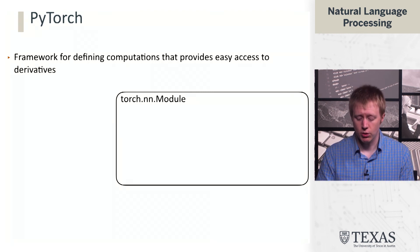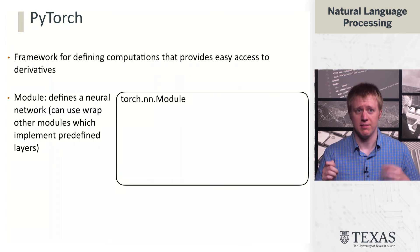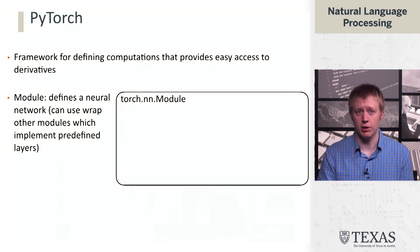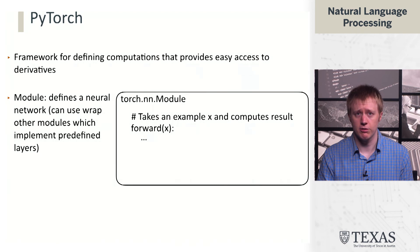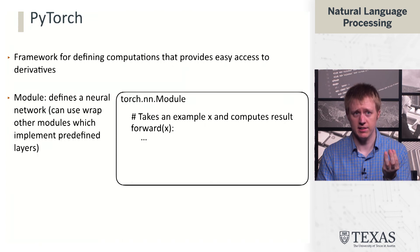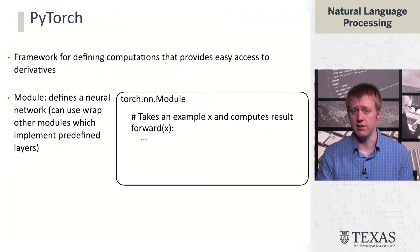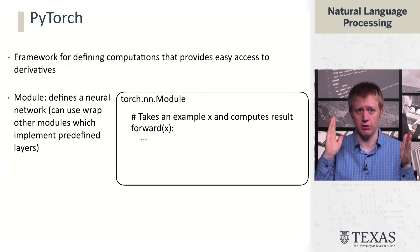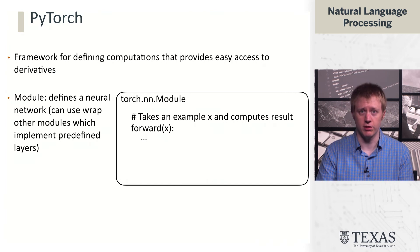A Torch module is the basic unit of a neural network. These things can be recursive or hierarchical, so you can wrap other modules which either implement predefined layers or other parts of your network. There's two critical pieces of functionality: we have forward, which takes an example or input and computes some result. This can represent either your entire network from feature vector to prediction, or just one layer from a vector of a certain size to another vector of a different size.